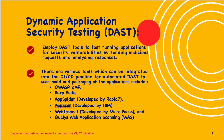Next is Dynamic Application Security Testing, or DAST. DAST employs tools to test running applications for security vulnerabilities by sending malicious requests and analyzing responses. Tools which can be integrated into the CI/CD pipeline for automated DAST scanning include OWASP ZAP, Burp Suite, AppSpider developed by Rapid7, AppScan developed by IBM, WebInspect developed by MicroFocus, and Qualys Web Application Scanning. This allows identification of runtime vulnerabilities like cross-site scripting (XSS) or insecure API use.